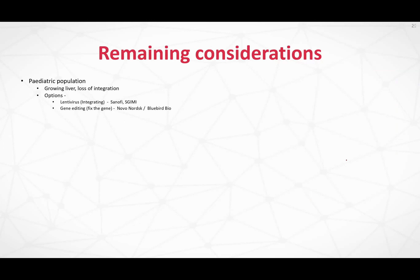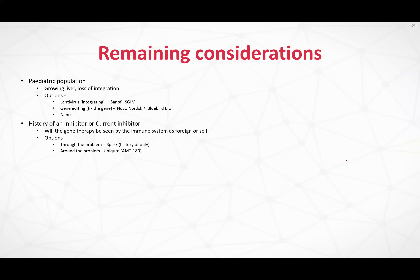Remaining considerations: for a pediatric population, a growing liver means loss of integration — but there are options. A lentivirus option exists but is an integrating virus, which we don't necessarily want. Sanofi and Sagami from China are looking into that. We also have gene editing — Novo Nordisk and Bluebird Bio — effectively going in and fixing the gene that is not working. For history of inhibitors: will gene therapy be seen by the immune system as foreign factor eight or factor nine, as it sees it now, or will it see it as a self-protein because you're producing it yourself?